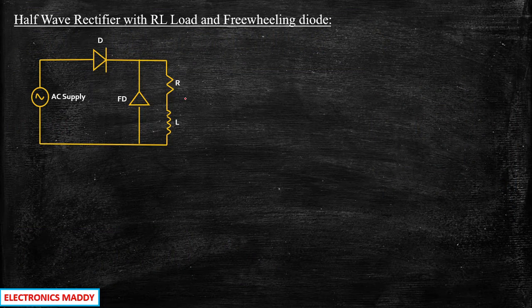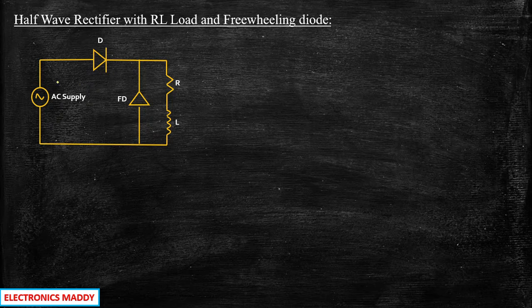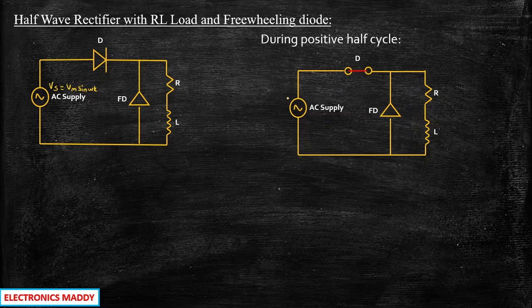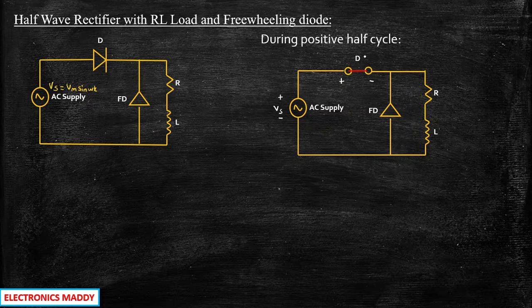In our previous video we saw the performance of the system for a half-wave rectifier with RL load. Now, what happens to the circuit if we have an additional diode called the freewheeling diode placed in this particular position? To understand this circuit better, let us consider two half cycles. The supply vs is equal to Vm sin(ωt). During the positive half cycle, the AC supply is positive at the anode of the diode and negative at the cathode, so the diode acts as a short circuit since it is forward biased and current starts flowing through this path.